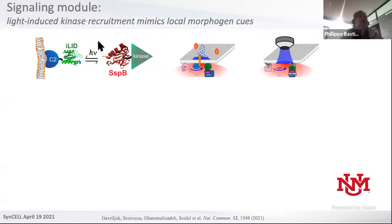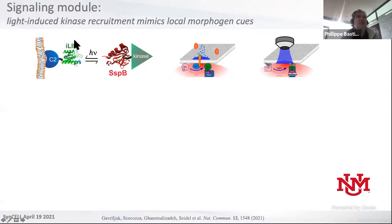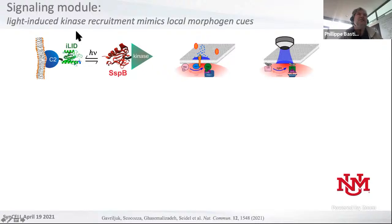We had to do protein engineering to build the system using an optogenetic approach. This iLID system is a LOV-based structure, and upon conformational changes, it can interact with the sspB domain. We took this iLID domain and fused it to the C2 domain that interacts with negatively charged phospholipids like phosphatidylserine, which we can introduce in our vesicles, to associate this part of the system to the membrane. We then fused our kinase, Aurora kinase, to sspB in order to make it light-responsive.